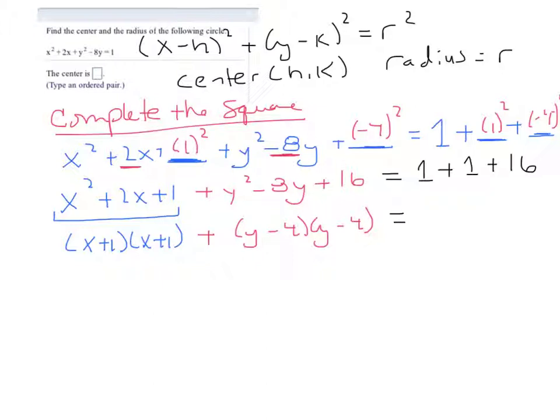And then on the left-hand side, I have 16 plus 1 plus 1 is 18. So we're almost there. x plus 1 times x plus 1 can be rewritten as x plus 1 quantity squared. y minus 4, y minus 4 can be rewritten as y minus 4 quantity squared. And then on the right-hand side, I have 18.